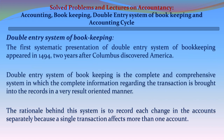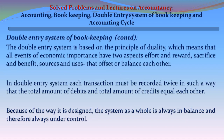The first systematic presentation of the double-entry system of bookkeeping appeared in 1494, two years after Columbus discovered America. It is a complete and comprehensive system in which complete information regarding transactions is brought into records in a result-oriented manner. The rationale is to record each change in accounts separately, because a single transaction affects more than one account. This system is based on the principle of duality, meaning all events of economic importance have two aspects: effort and reward, sacrifice and benefit, source and uses that offset or balance each other.